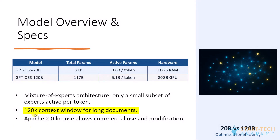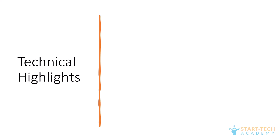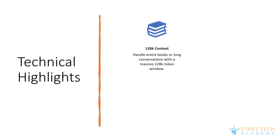Both models feature a 128K context window, which means you can input huge documents, even entire books and PDFs. They are also released under the Apache 2.0 license, which allows everyone to use, modify and even commercialize the model with minimal restrictions. Technically, GPT-OSS is impressive — the 128K context window is sufficient for entire books or long research papers.